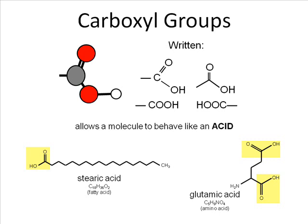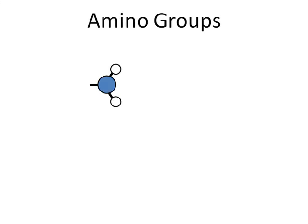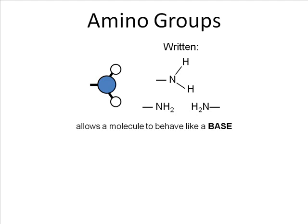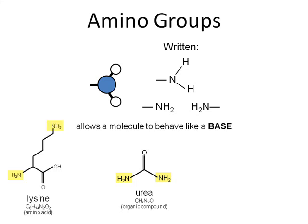If carboxyl groups make for acids, something else must make for bases. The amino group — a nitrogen covalently bound to two hydrogens (NH2) — makes organic molecules act as bases. Here we have urea, a central carbon double-bound to an oxygen and bound to two amino groups, which acts as a weak base. Lysine, the amino acid, has two NH2 groups. And asparagine, another amino acid, also has an NH2 group in it. Amino groups make substances act like bases.